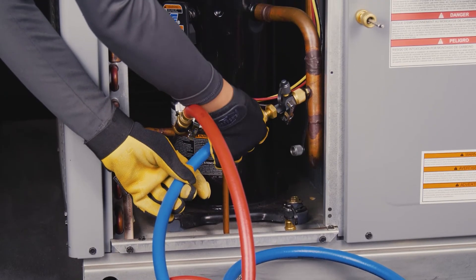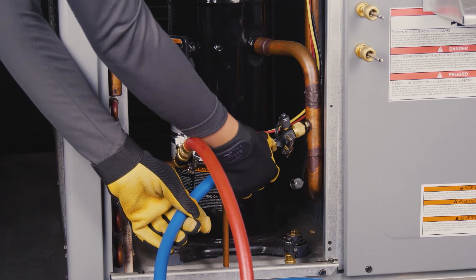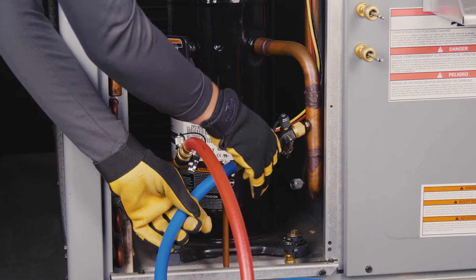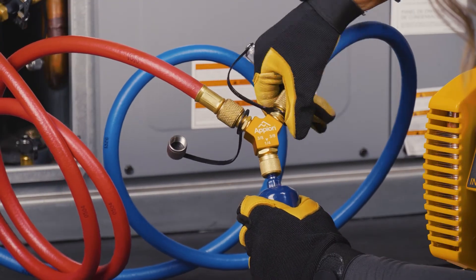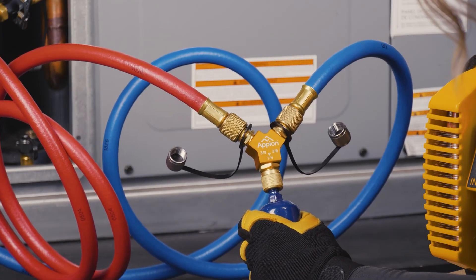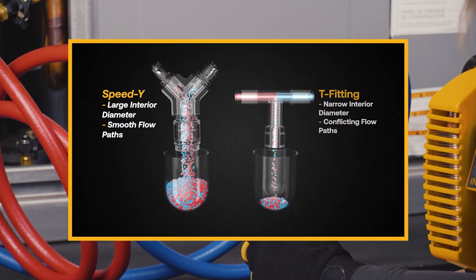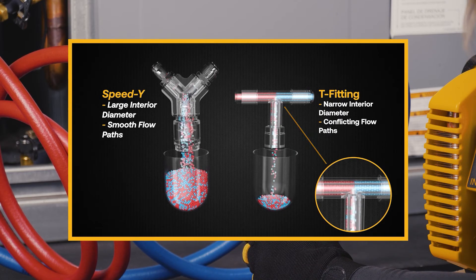After removing all input restrictions, connect the maximum number of hoses that the system allows without adding unnecessary connection points. Use a Y fitting rather than a T fitting when available to connect your hoses to the recovery machine. This will allow for merging flow paths, which avoids problems like turbulent flow and opposing flow paths commonly associated with a T fitting.